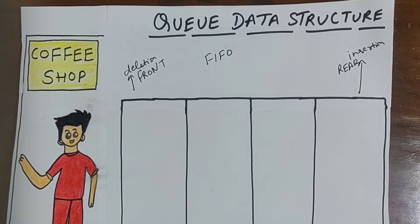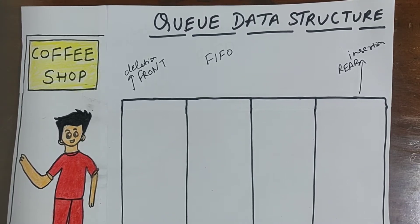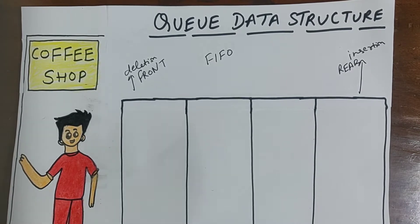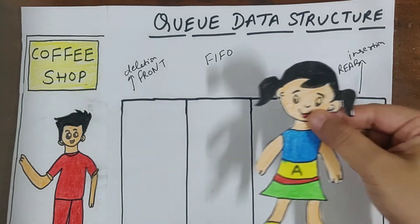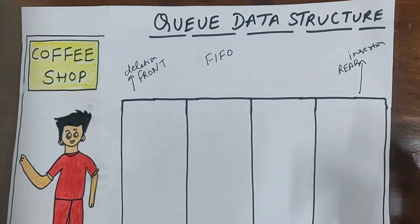Hello everyone. The next topic is priority queue in data structures. Let's discuss this with a real world example. Suppose this is a coffee shop and people are entering the coffee shop from this side. Initially the coffee shop is empty.